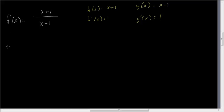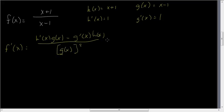f prime of x, then, is equal to the derivative of the top, which is h prime of x, times the bottom, minus the derivative of the bottom, times the top, all over the bottom, squared. OK. Again, always writing that down until we have it in our heads. So the very first thing we do is x plus 1, which is our h.